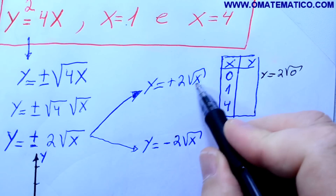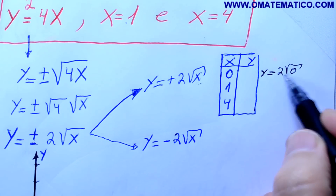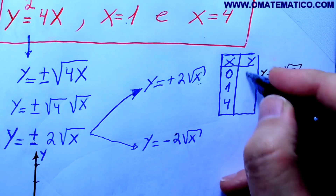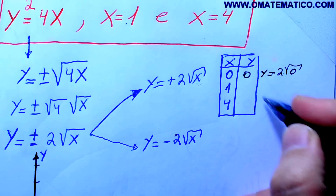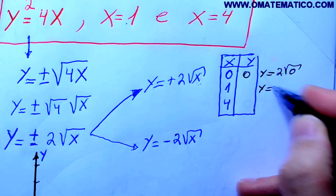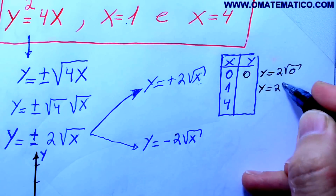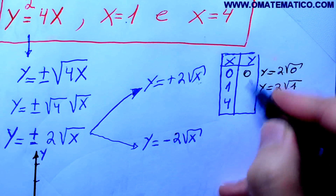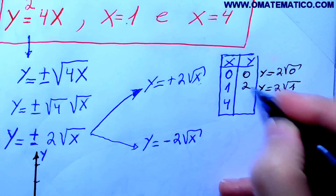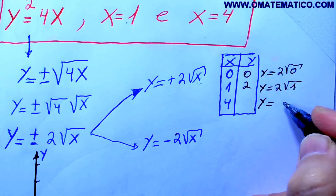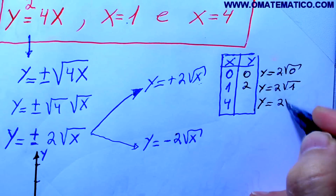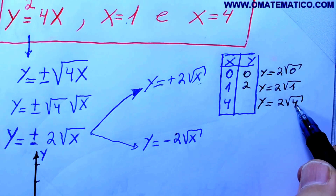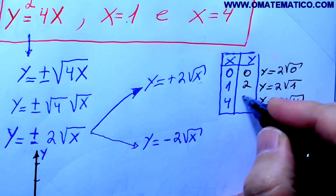Colocando zero aqui dentro, raiz de zero é zero, vezes 2 é zero. O próximo: y é igual a 2 raiz de 1. Raiz de 1 é 1, dá 2. y é igual a 2 raiz de 4. Raiz de 4 é 2, vezes 2 é 4.